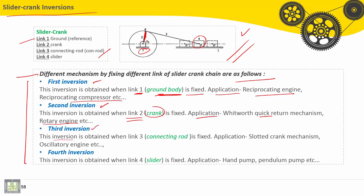Third inversion. This inversion is obtained when link number three, the connecting rod, is fixed or grounded. As an application for this: slotted crank mechanism, oscillatory engine, etc.